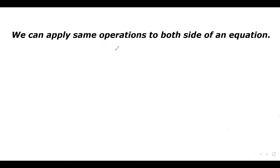Let's say I have this equation: 6 equals 6. The left side of the equation equals the right side of the equation. This equation is always true. So we can apply the same operations to both sides of an equation and that equation will still be true. If we add, subtract, multiply, or divide a value to the left side and we do the same to the right side, that equation will still be true.